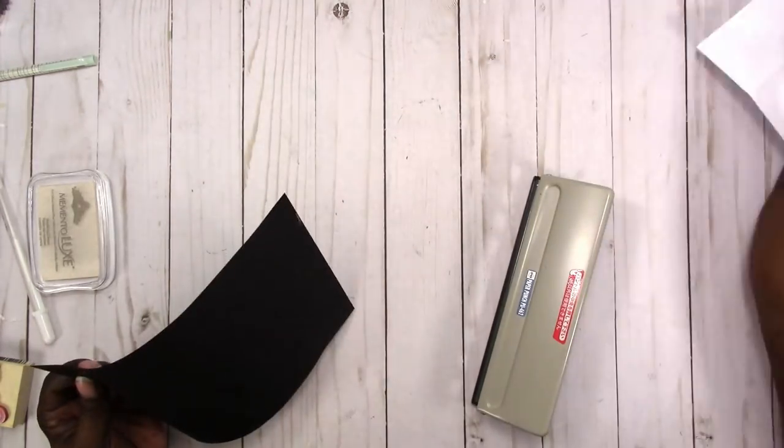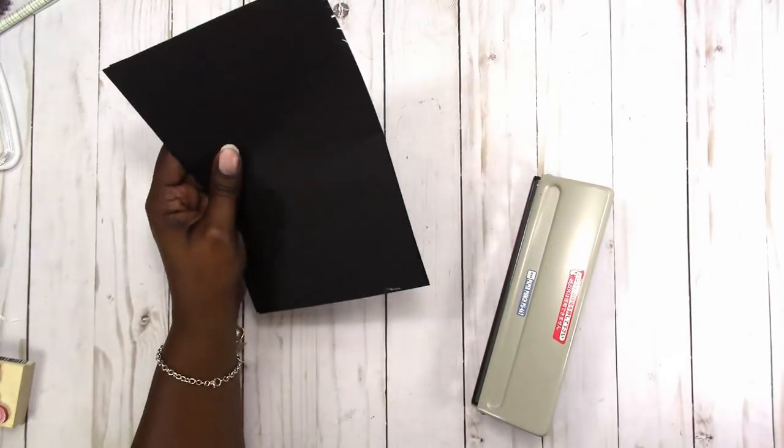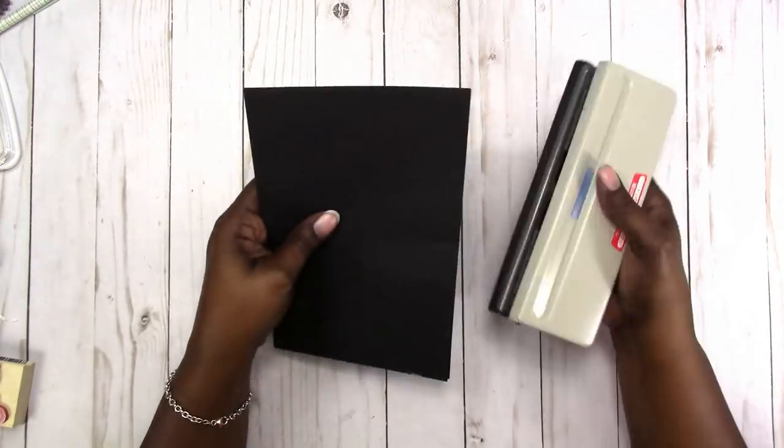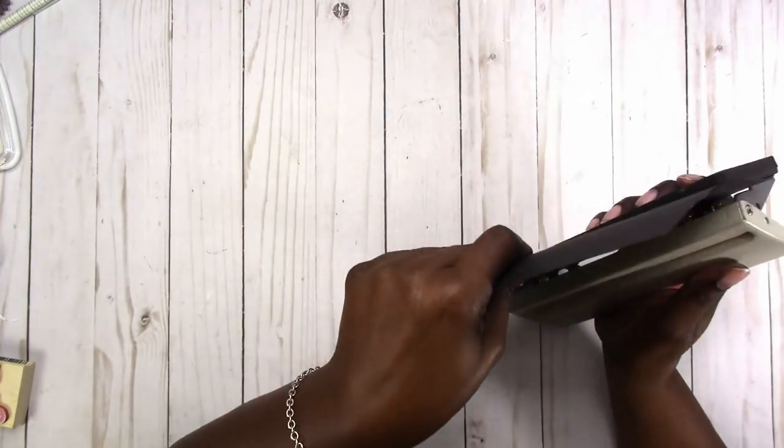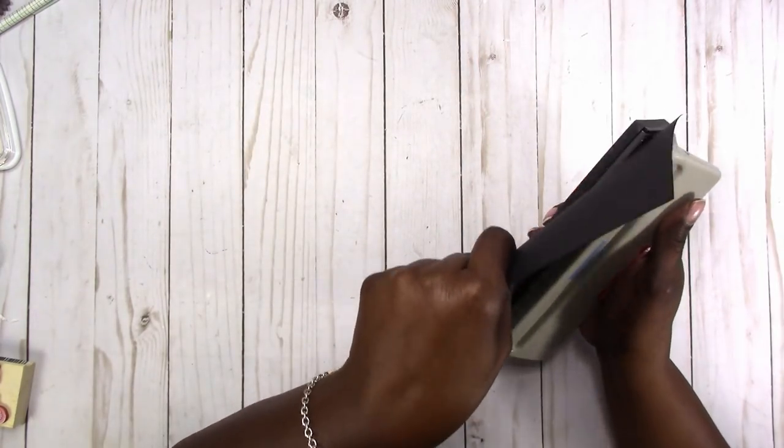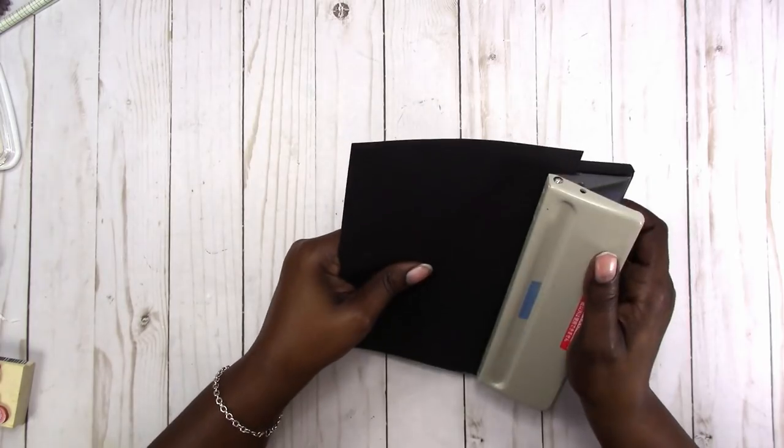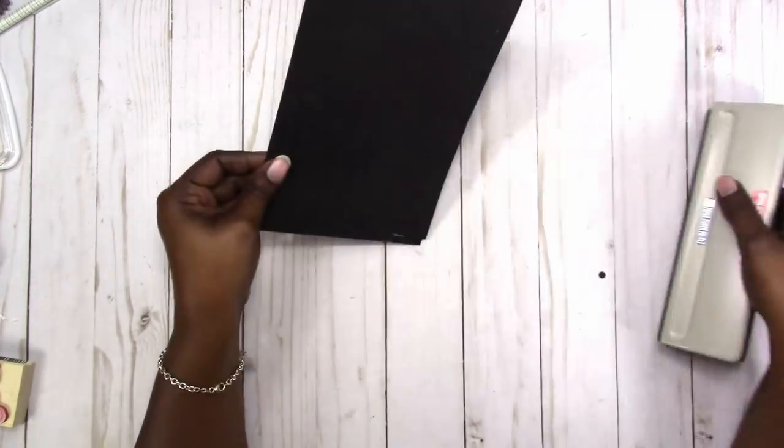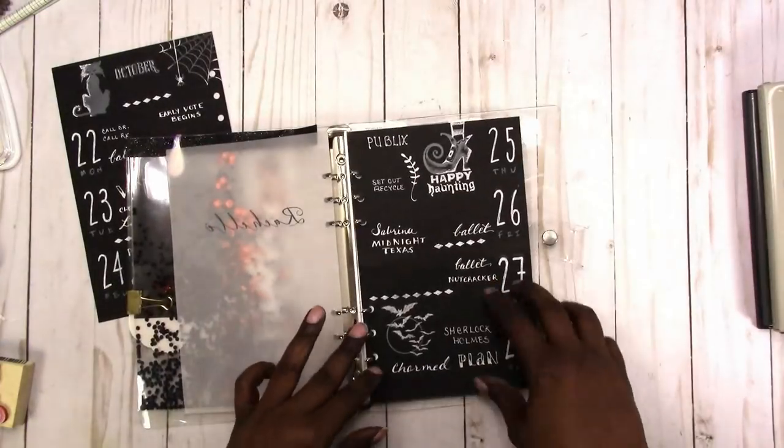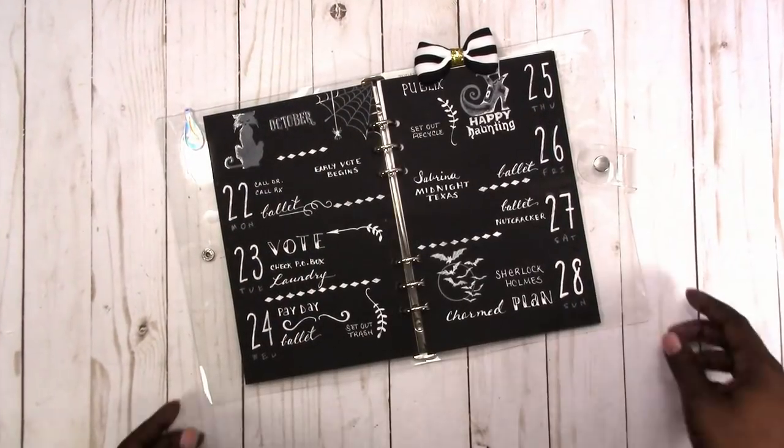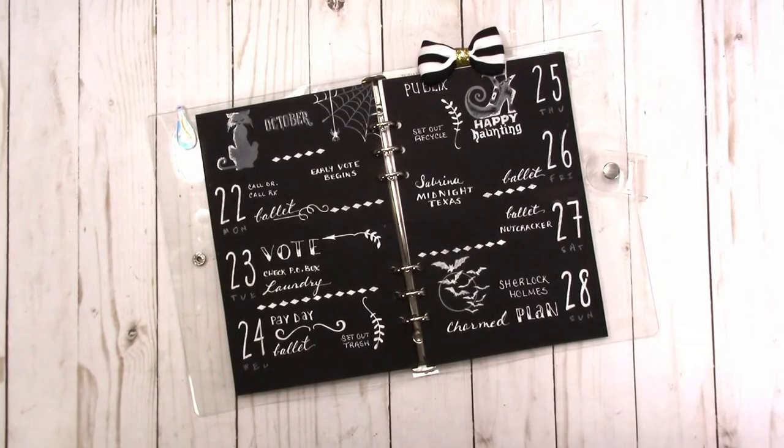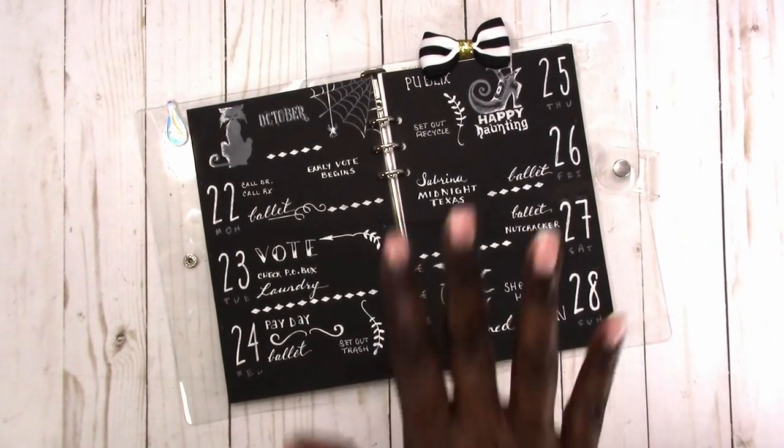Now I'm going to get ready to put this in my planner and punch the holes once I find the center. I was taking forever to punch the hole, I don't know why, but anyway. So now it's in the planner and this is the completed spread. That's it, thanks for watching. I'll talk to you later, bye.